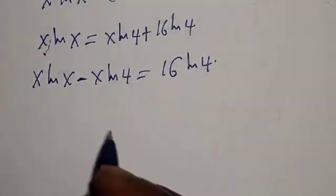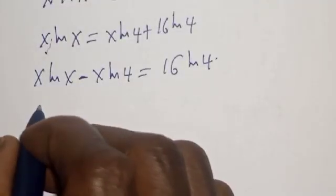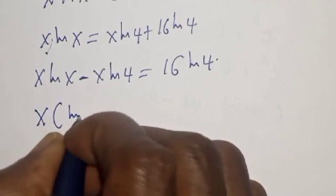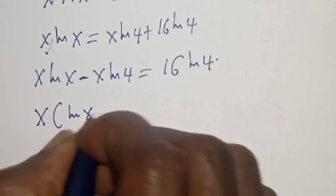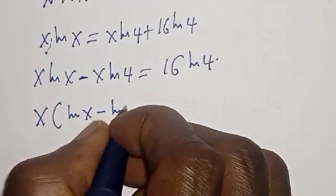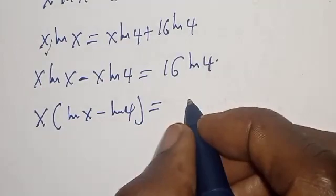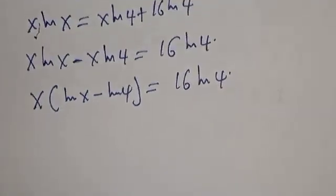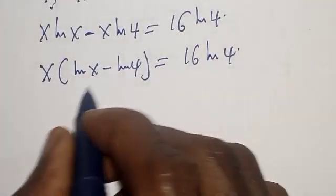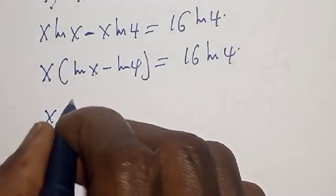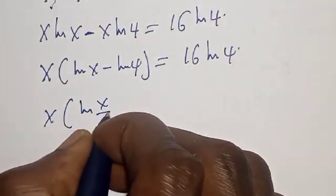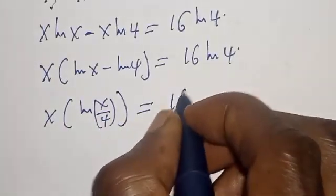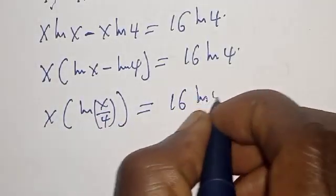Now x is common, so we factor: x times (natural log of x minus natural log of 4) is equal to 16 natural log of 4. This simplifies to x times natural log of x over 4 is equal to 16 natural log of 4.